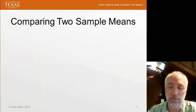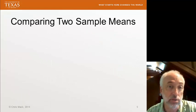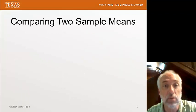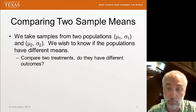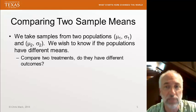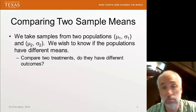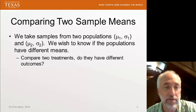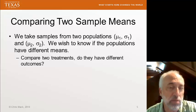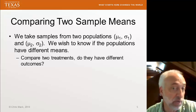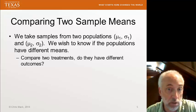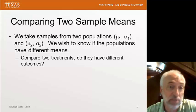There's another interesting application that comes about frequently, that is comparing two sample means. I've got two populations, mu1, sigma1, the mean and standard deviation of one population, and mu2, sigma2, the mean and standard deviation of another population. And I want to know if these two populations have different means.